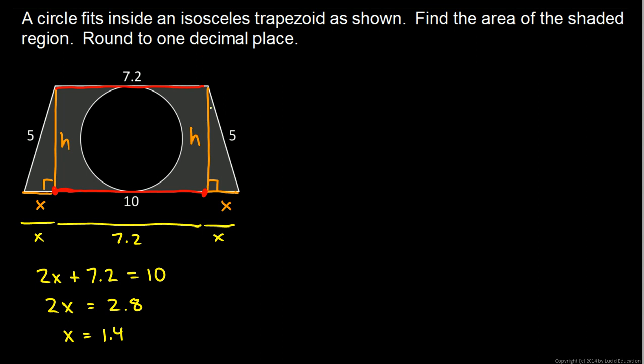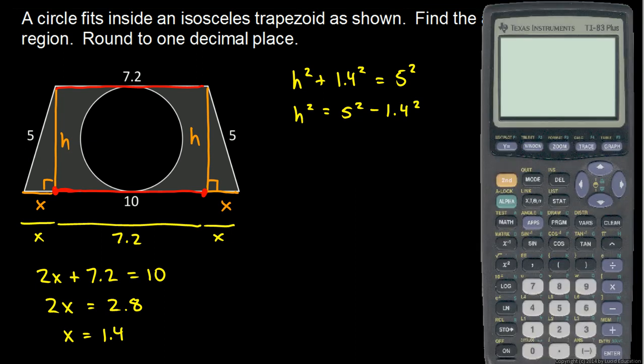Then we can take one of these small triangles and apply the Pythagorean theorem. I can write h squared plus 1.4 squared is equal to 5 squared. So h squared, just rearranging this, will be 5 squared minus 1.4 squared. And we can figure that out. Let's pull up the calculator. 5 squared minus 1.4 squared is 23.04.